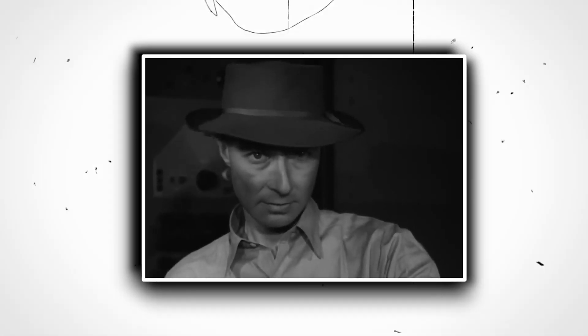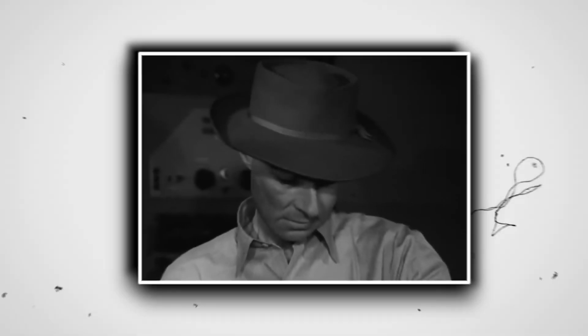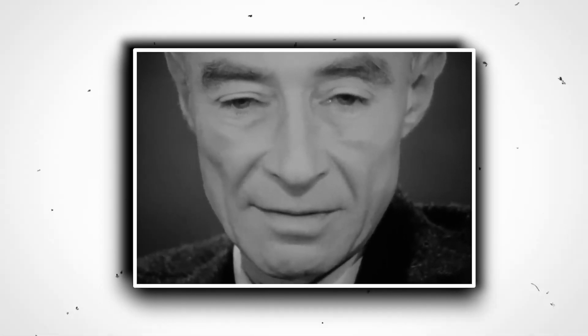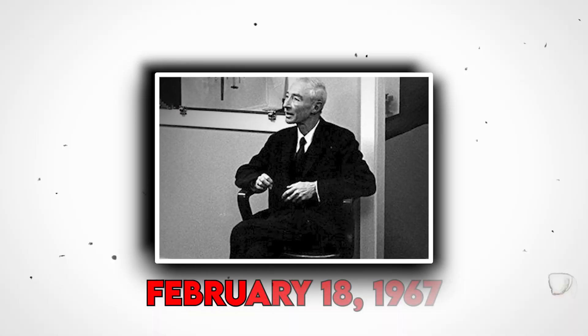After the war, he advocated for international control of nuclear weapons, working towards peace and nuclear disarmament. However, due to his political views during the Cold War, he faced controversy and his security clearance was revoked. After battling throat cancer for several years, Robert Oppenheimer finally died on February 18, 1967, at the age of 62.